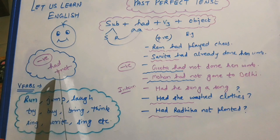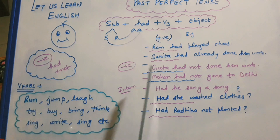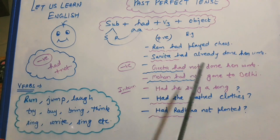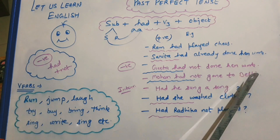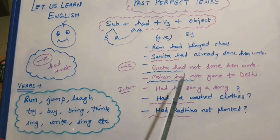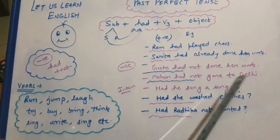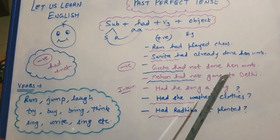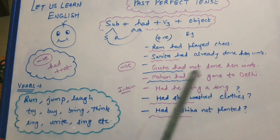In the negative sentences, we use had plus not. Geeta had not done her work. Mohan had not gone to Delhi. 'Gone' is V3.